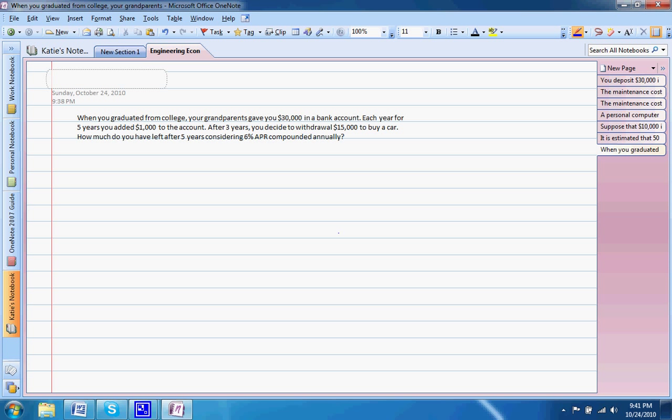So our first step is to draw a cash flow diagram. This is our timeline. In year zero, we have the $30,000. And in year five, we want to know what our final value is, our future value. So then we have year one, two, three, and four.